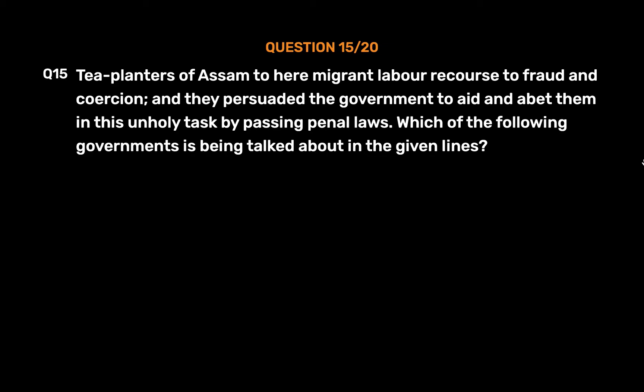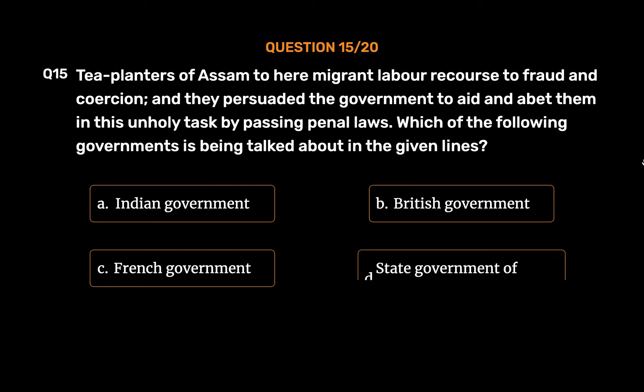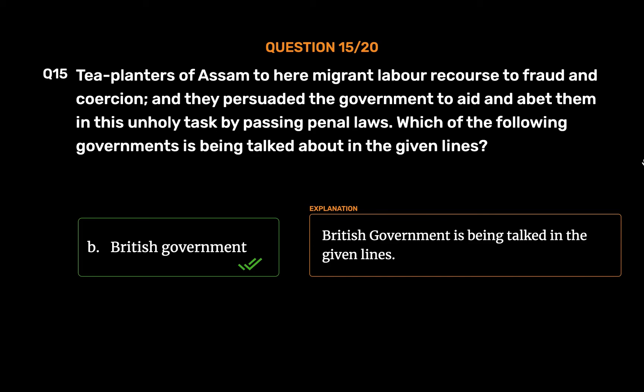Question 15: Tea planters of Assam, to secure migrant labor, resorted to fraud and coercion, and persuaded the government to aid them by passing penal laws. Which government is being referred to? Options: A. Indian government, B. British government, C. French government, D. State government of Assam. The correct answer is Option B: British government.